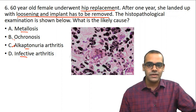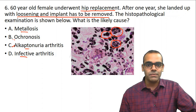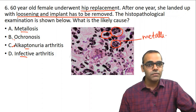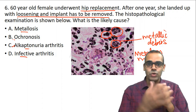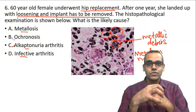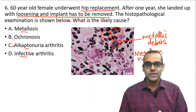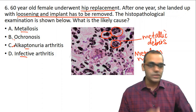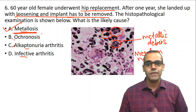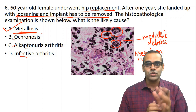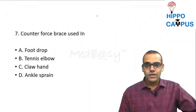The histopathological slide shows multiple black-to-brown colored material — these are metallic debris, classically seen in metal-on-metal THR. In metal-on-metal total hip replacement using a metal femoral head and metallic acetabulum, increasing amounts of metallic ions enter the bloodstream causing metallosis. This caused loosening and the implant had to be removed. So the answer is metallosis.